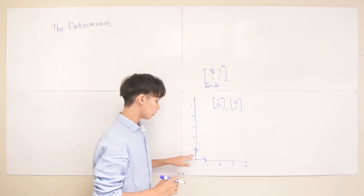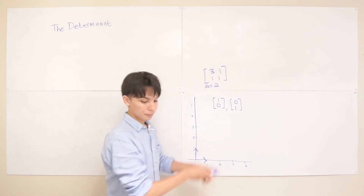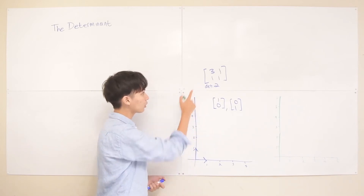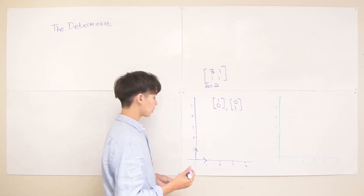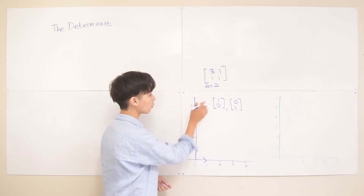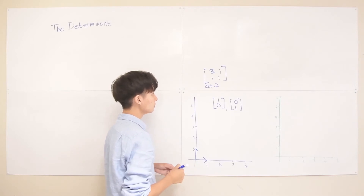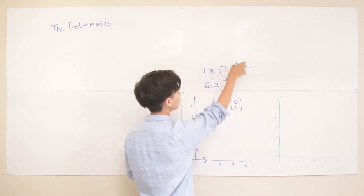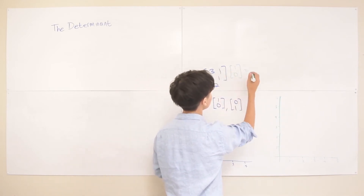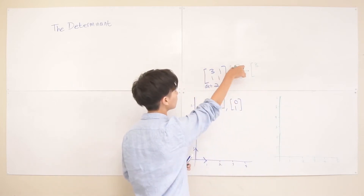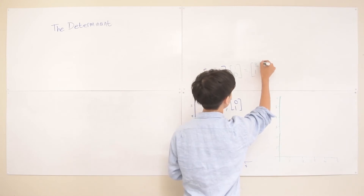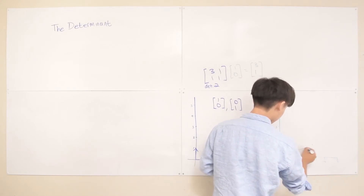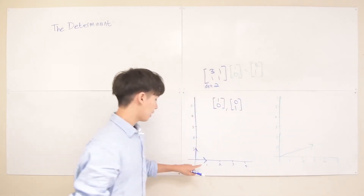Let's draw this transformed space. We're going to multiply the unit vector in the x direction, [1,0], by this matrix to see where it goes. So [3,1,1,2] times [1,0]: 3 times 1 plus 1 times 0 gives 3, and 1 times 1 plus 2 times 0 gives 1. So the x unit vector goes to [3,1], which is quite far out in the transformed space.